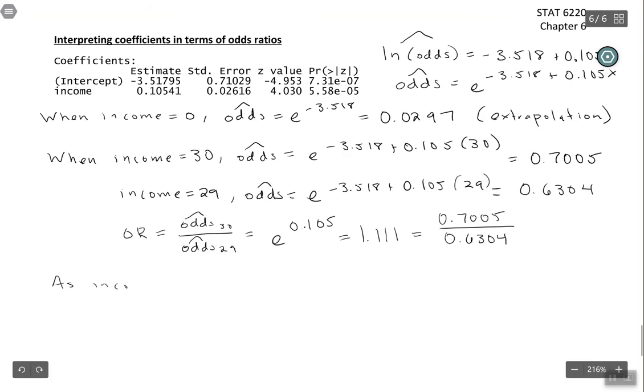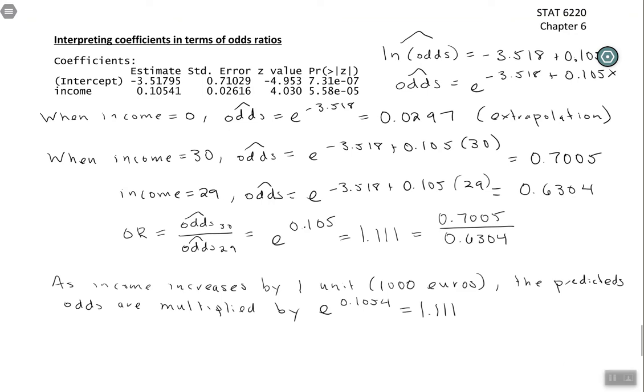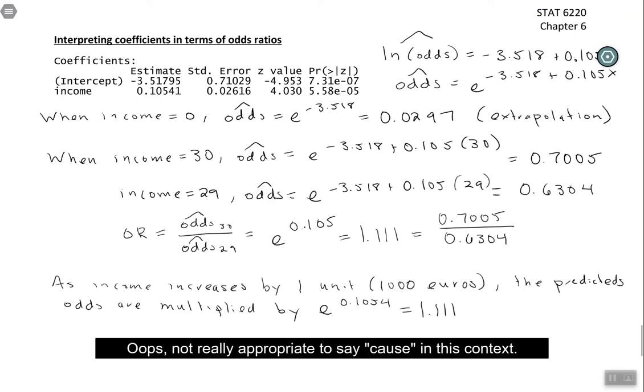So the way we interpret the slope is to say, as income increases by 1 unit, and in this case, the unit is 1,000 euros, since the data were in thousands. As income increases by 1,000 euros, the predicted odds are multiplied by this amount. So multiplied by e to whatever our slope is, in this case, 0.1054 or 1.111. So this is different from a linear model, because a 1 unit change in x doesn't cause an additive change in y, it causes a multiplicative change in y.